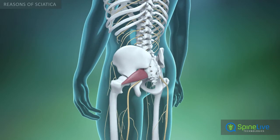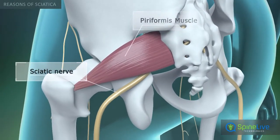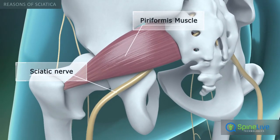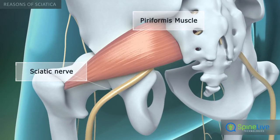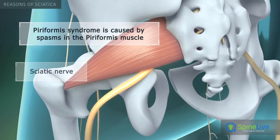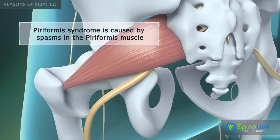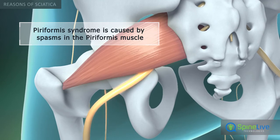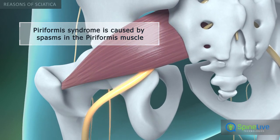Sometimes nerve compression is not in the spine but further down the leg. One possible cause is piriformis syndrome. This occurs when the piriformis muscle shortens or spasms due to trauma or overuse.